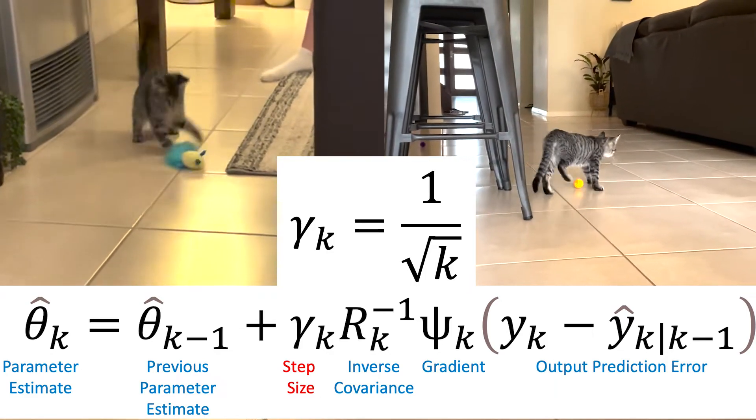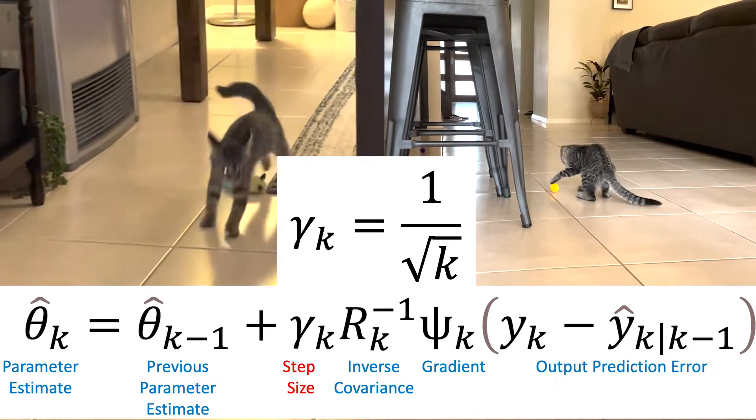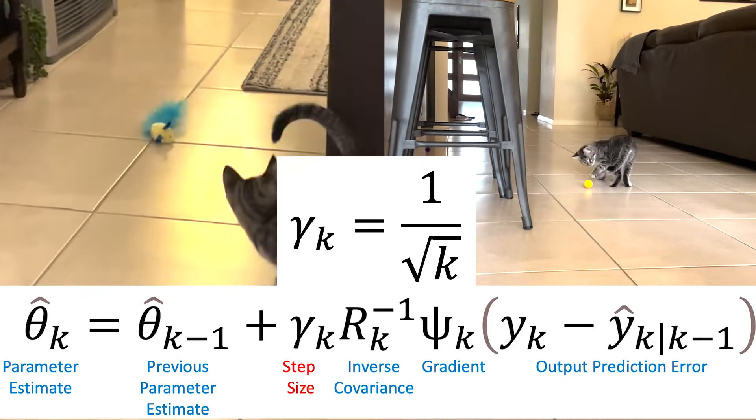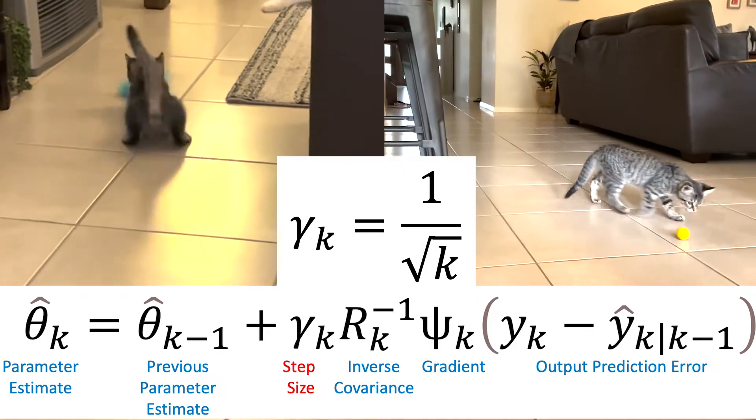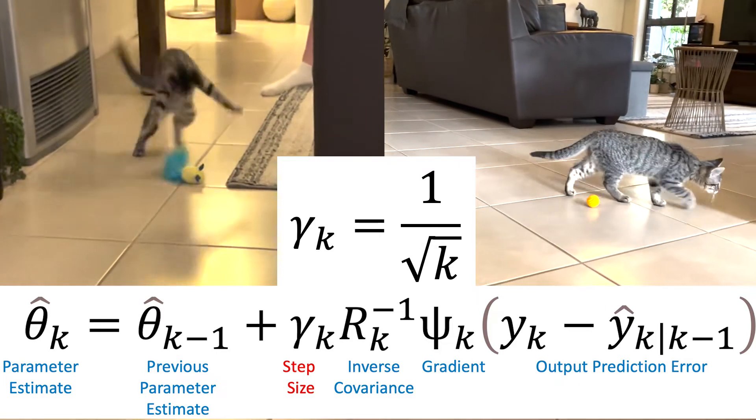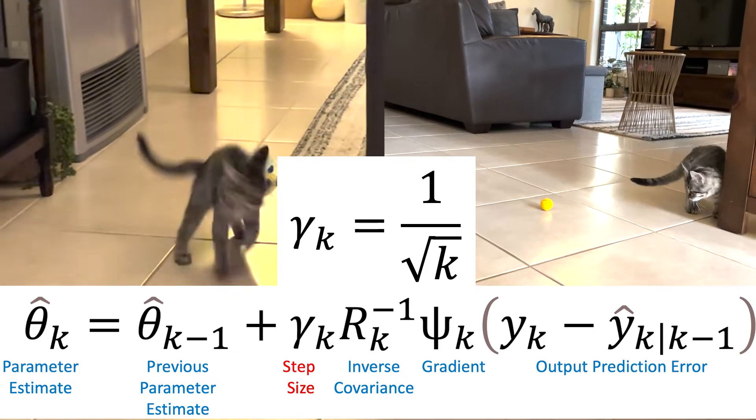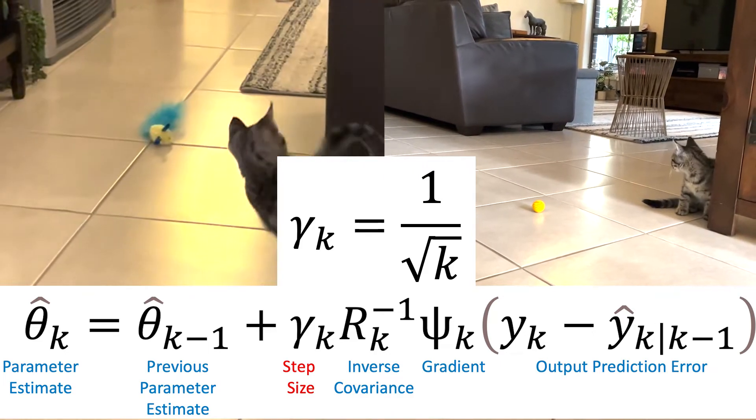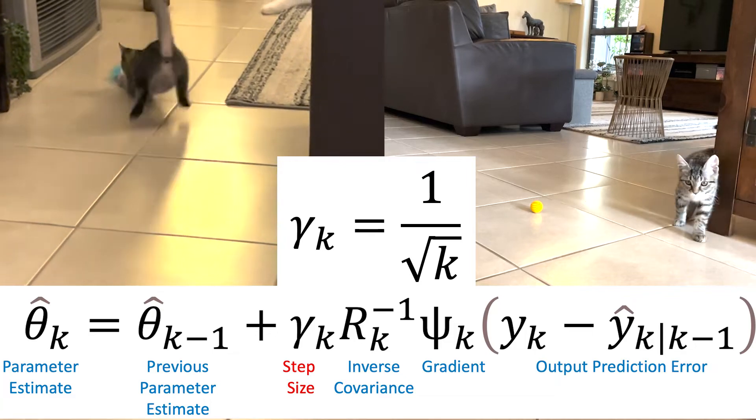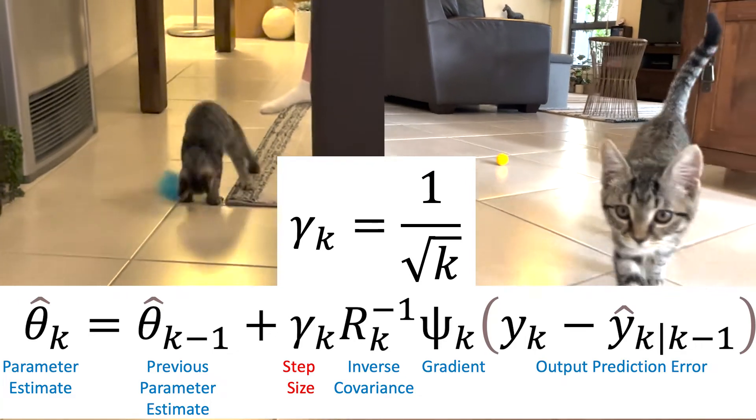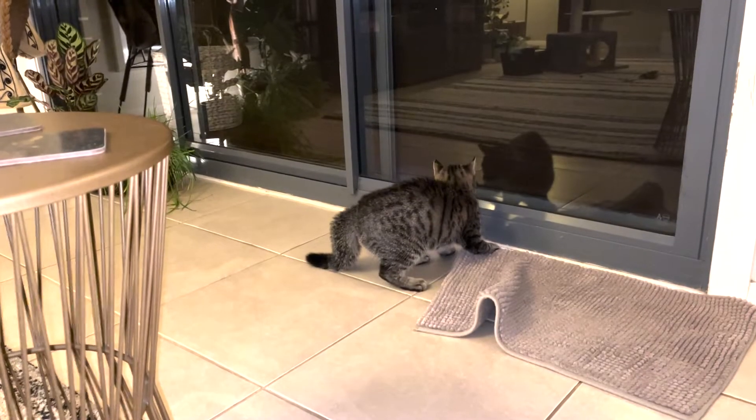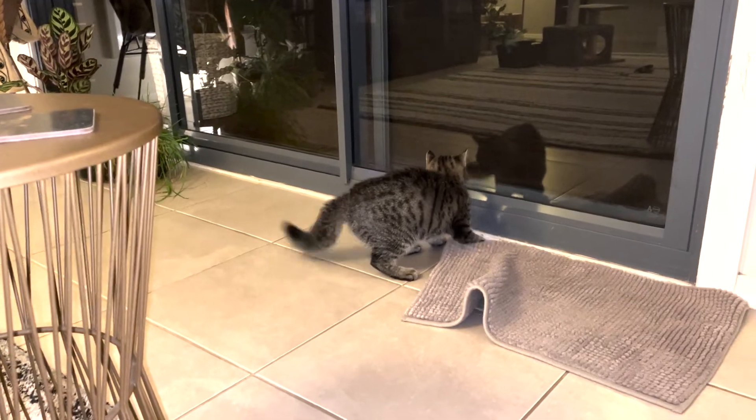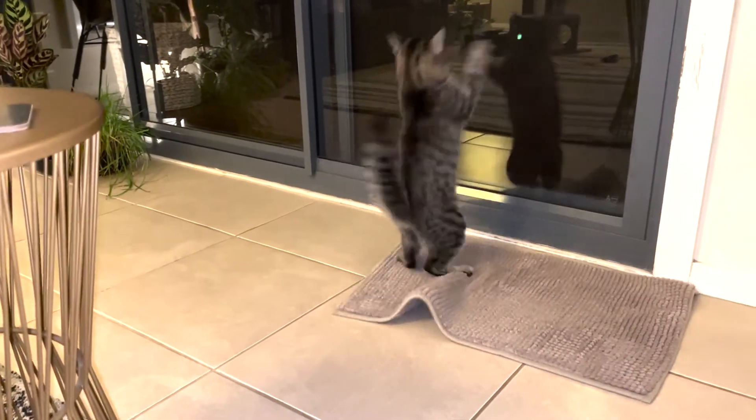A common choice is for gamma k to be set as 1 divided by the square root of k. There are theoretical convergence results when gamma k equals 1 over k, but this tends to become too small too quickly. So 1 divided by the square root of k is better in practice. Of course, this is all for a constant parameter theta that you're learning more about as you take more measurements.